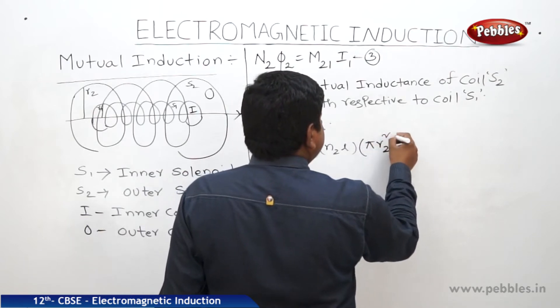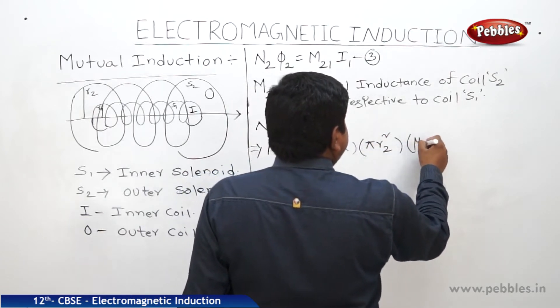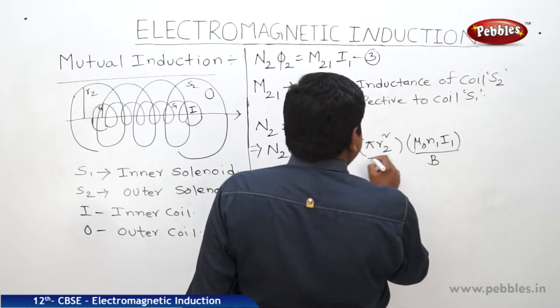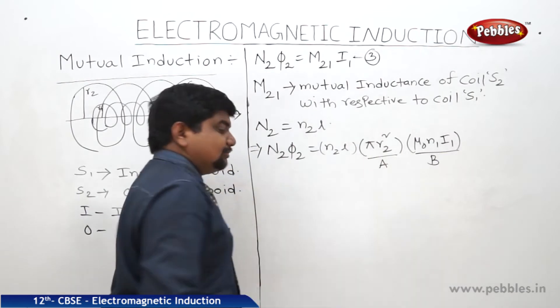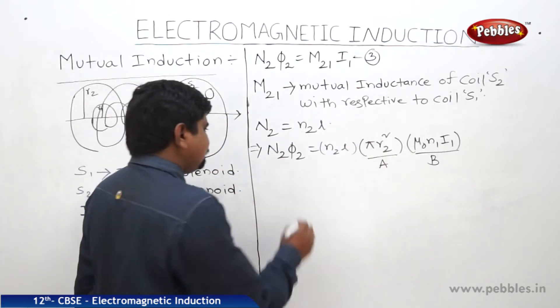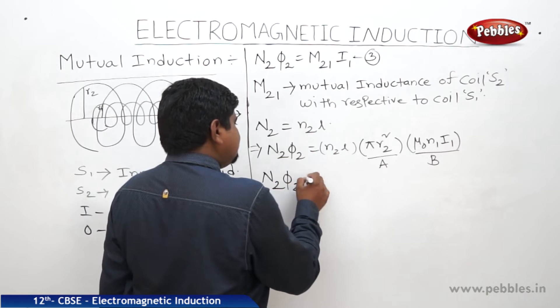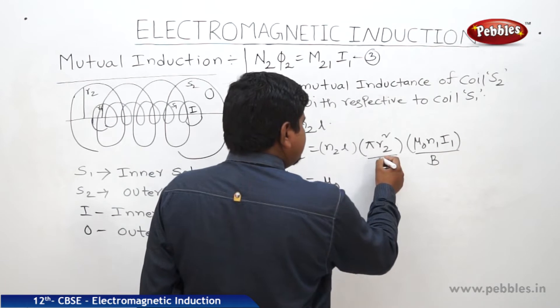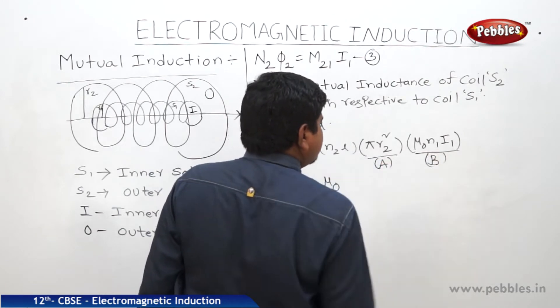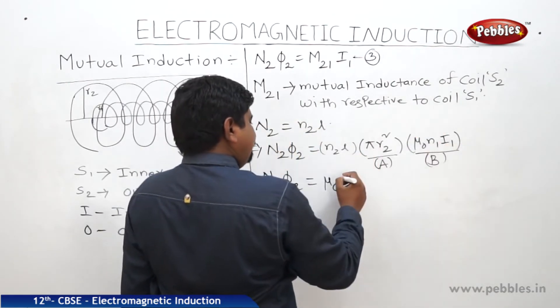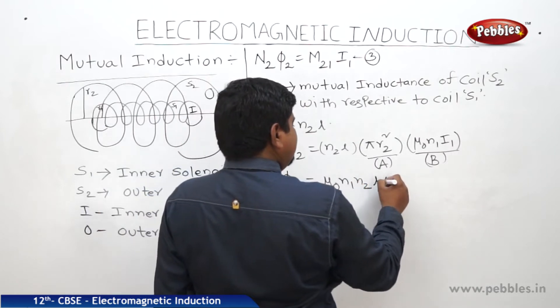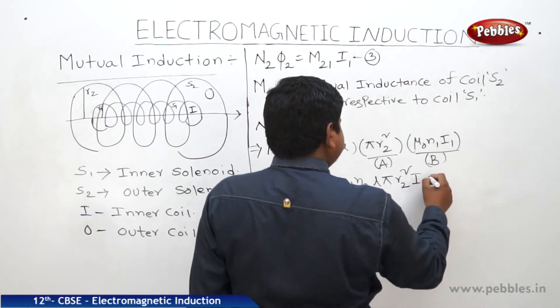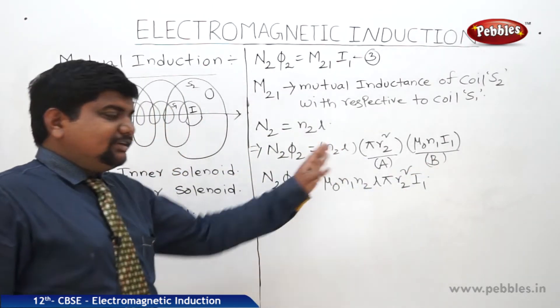So pi R2 square into mu 0 N1 I1. This refers to B. This refers to A. So phi is equal to BA. Again we can write N2 phi 2 is equal to mu 0 N1 N2 L pi R2 square I1. We got the equation like this.